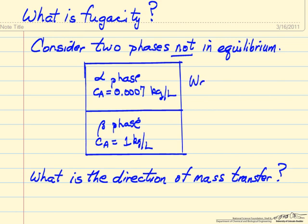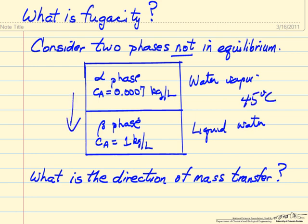if this phase was water vapor, and this phase was liquid water, and we were at 45 degrees C, then mass transfer would be in this direction.